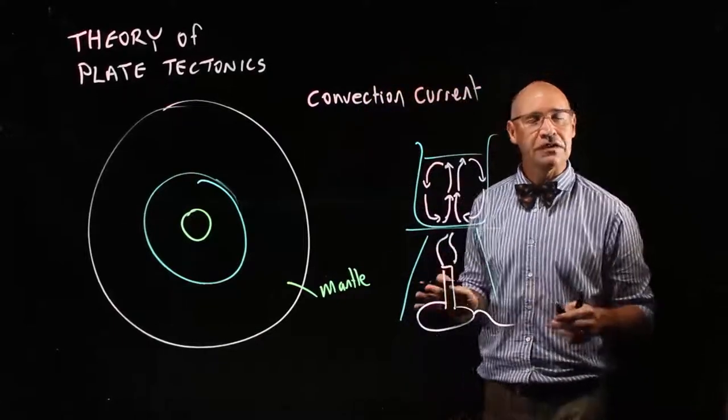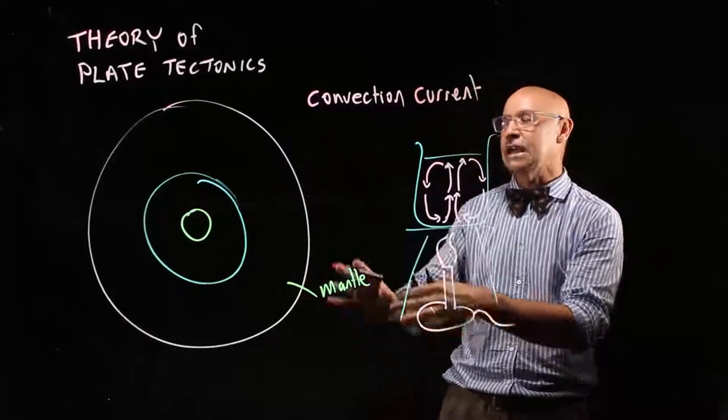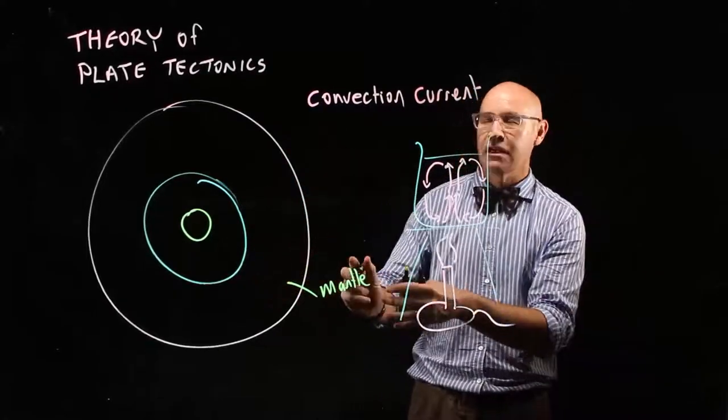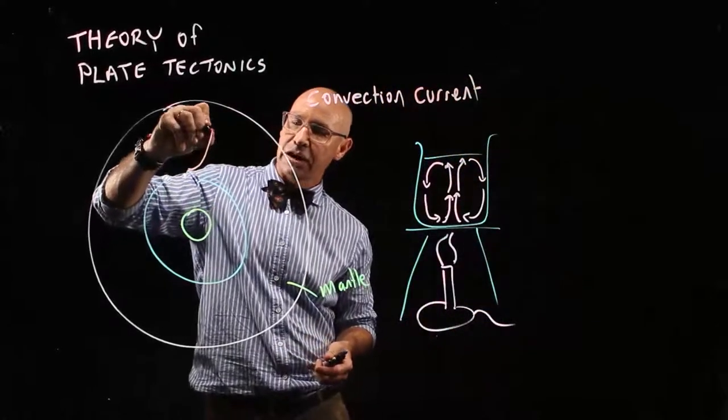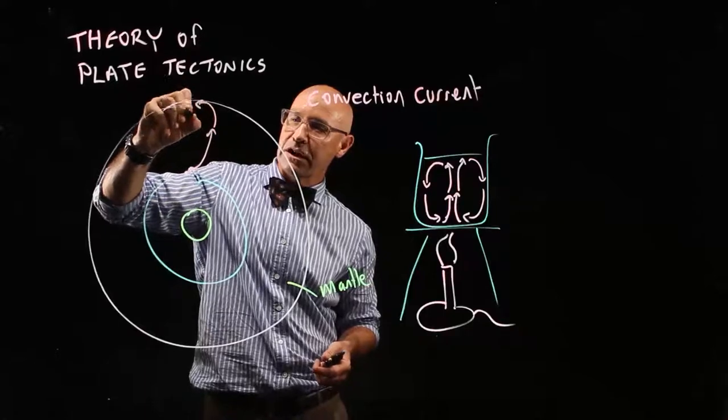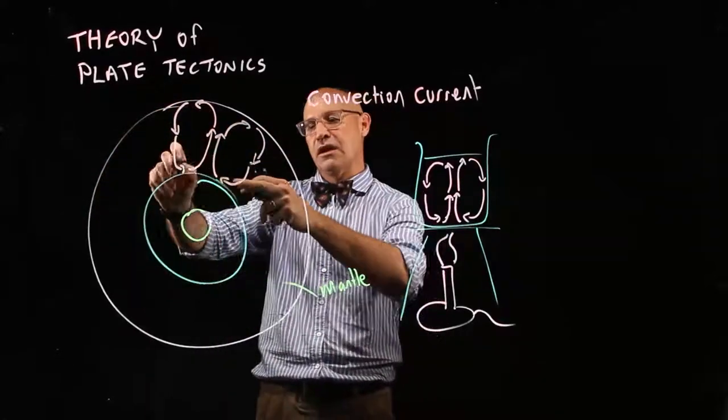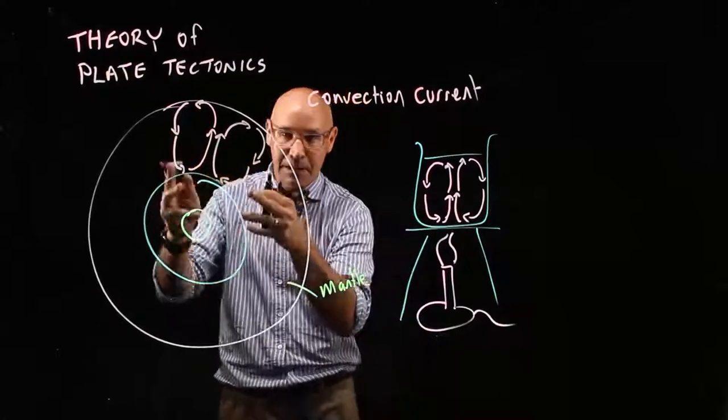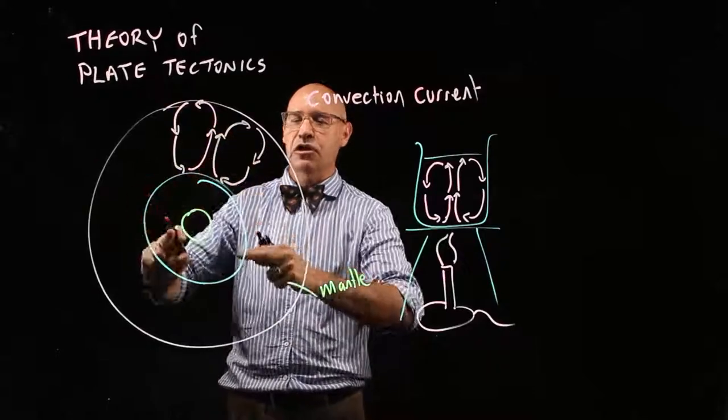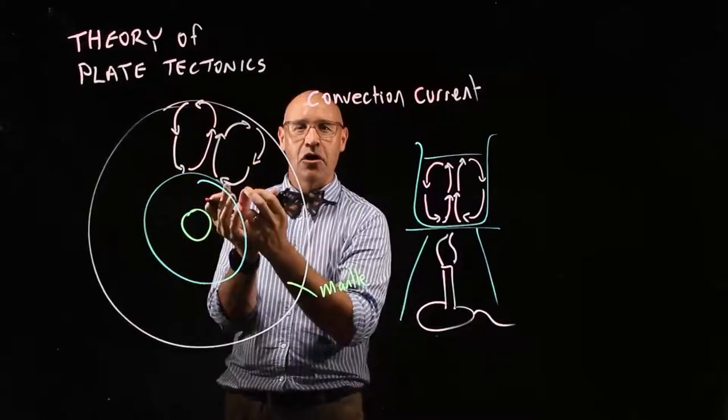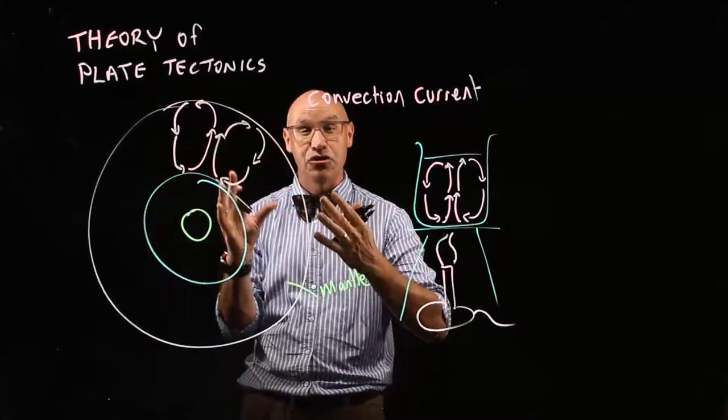The theory of plate tectonics suggests that that's exactly what happens in the mantle to move the crust. So we have convection currents that develop up through here. So the mantle, the magma inside the mantle, when it's close to the core, it's hotter. So it expands and reduces its density.